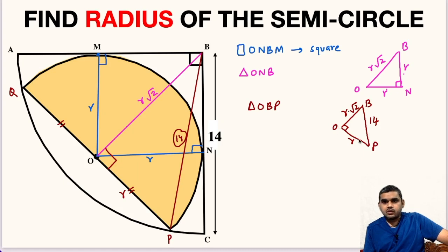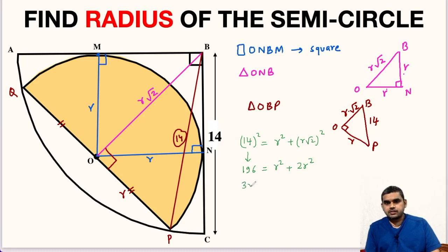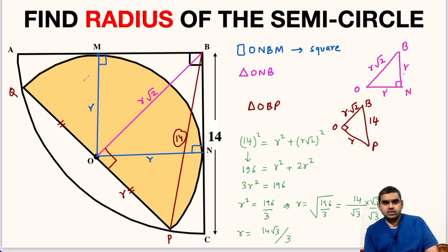Now, let us apply Pythagorean theorem in this triangle OBP. Here the hypotenuse is 14. So 14 squared equals R squared plus R root 2 whole squared. 14 squared is 196 equals R squared plus 2R squared. In short, 3R squared equals 196. R squared is 196 upon 3. From here, R will be the square root of 196 upon 3. On simplifying this, we get root 3 in the denominator and the square root of 196 is 14. We can rationalize it - multiply and divide by root 3. The radius will be 14 root 3 upon 3. The radius of this semicircle is 14 root 3 upon 3 units.